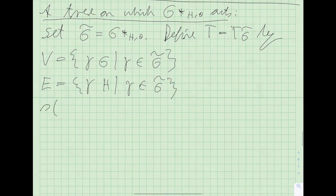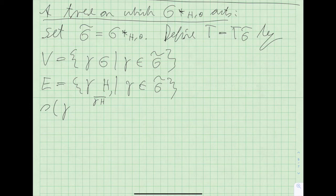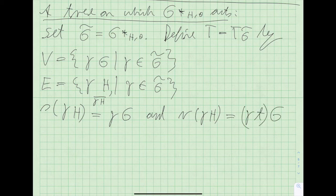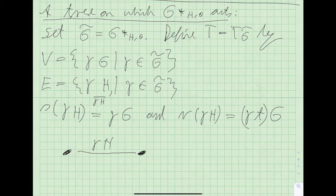The source and range of edges are given as follows: technically we also need to add inverse edges as artificial copies. The source of the edge gamma·H is gamma·G, and the range of gamma·H is gamma·T·G, where T is the stable letter and gamma is any element of the HNN extension. So an edge gamma·H goes from gamma·G to gamma·T·G.